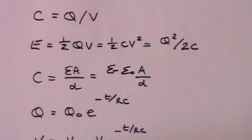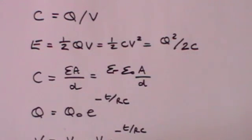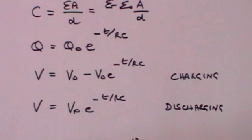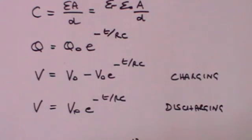Then we've got the question of charging a capacitor. If you have a capacitor in a circuit and you're charging it, then the amount of charge after a time T will equal Q zero — the final charge — times E to the minus T over RC, where R is the resistance in the circuit and C is the value of the capacitor. Similarly, the potential across that capacitor when charging will equal V zero, the maximum voltage, times E to the minus T over RC.